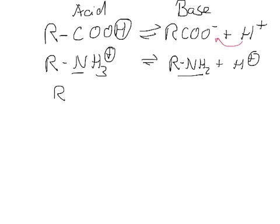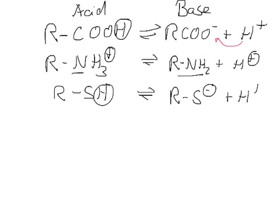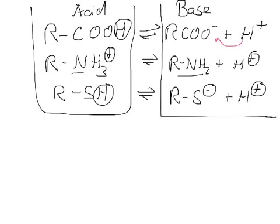We also might have an SH group in cysteine. For example, we might have R-SH and again here we have the proton donor so we could get RS⁻ plus H⁺. On this side we have all the bases and on this side we have the acids.